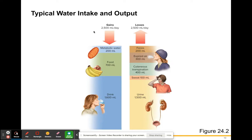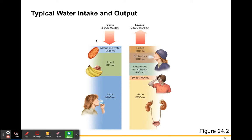Here's a graphic of typical daily gains and losses: you gain metabolic water, water from food, and water from drinks. You lose it through urine, sweat, cutaneous transpiration, expired air, and fecal matter.